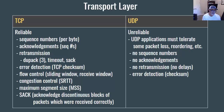In TCP, header fields contain information like sequence numbers — every byte in the communication gets a sequence number — and we also have acknowledgments. As data is transferred, the receiver acknowledges it with the sequence number, letting the sender know the information is being received. TCP involves the possibility of retransmission, meaning lost data can be retransmitted. In UDP, by contrast, there's no retransmission and therefore no retransmission delays.